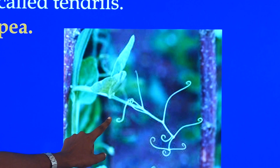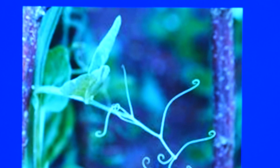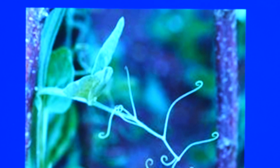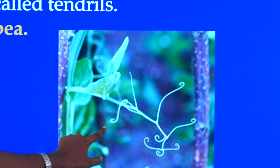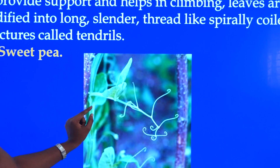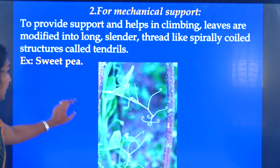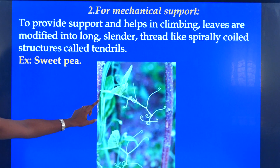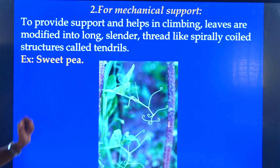When one plant wants to climb over another plant, for the mechanical support these tendrils will help. There will be a modification in the leaf — the leaf is modified into tendrils. Those tendrils function for mechanical support, helping the plant climb over other plants. The best example for this is sweet pea, which has tendrils.